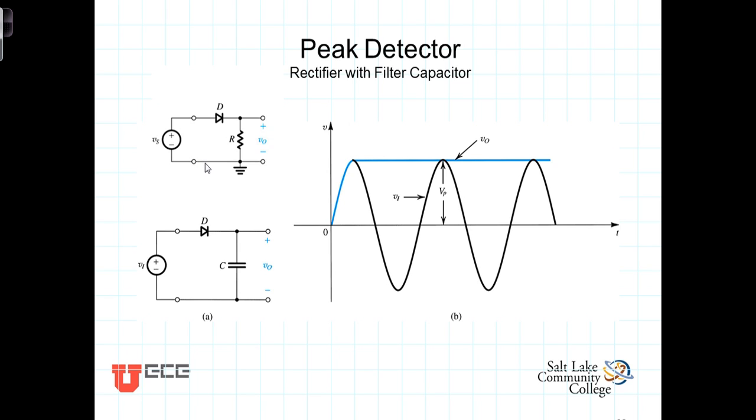You'll recall the half-wave rectifier that we have already studied was this circuit right here. The diode only allowed current to flow in one direction, and so during the positive cycle, current flowed and we had a voltage across it.